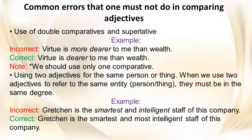Common errors that one must not do when comparing adjectives: Use of double comparatives and superlatives. Example — Incorrect: 'Virtue is more dearer to me than wealth.' Correct: 'Virtue is dearer to me than wealth.' Note: We should use only one comparative. When using two adjectives for the same person or thing, they must be in the same degree. Incorrect: 'Gretchen is the smartest and intelligent staff of this company.' Correct: 'Gretchen is the smartest and most intelligent staff of this company.'